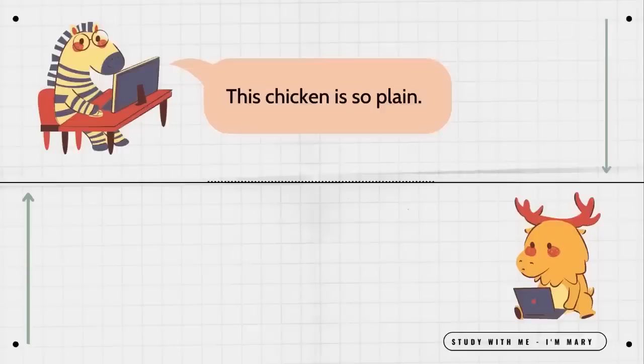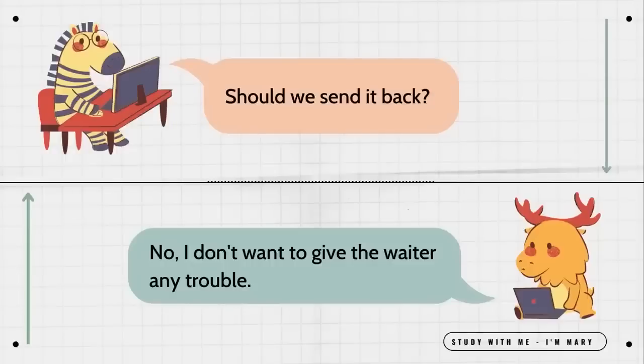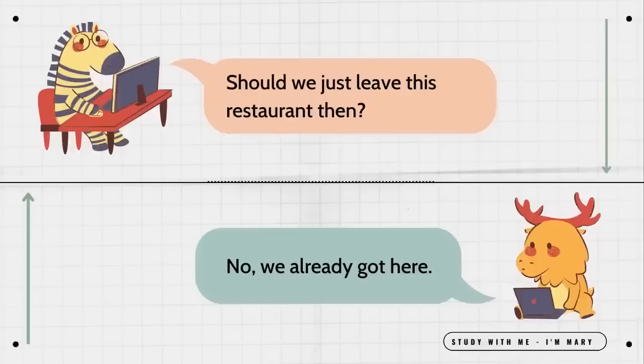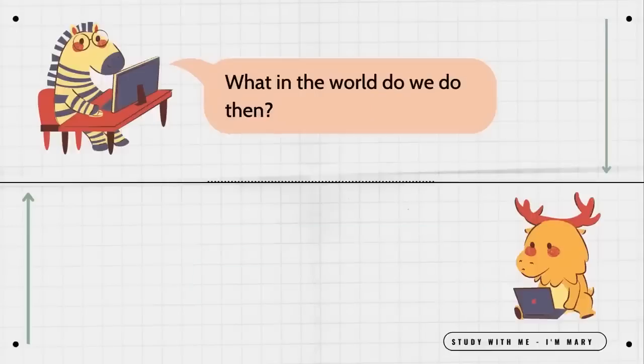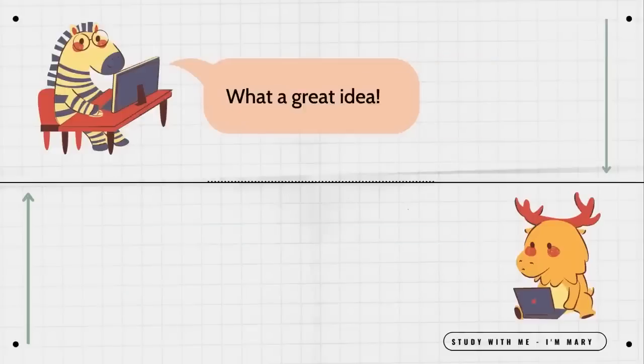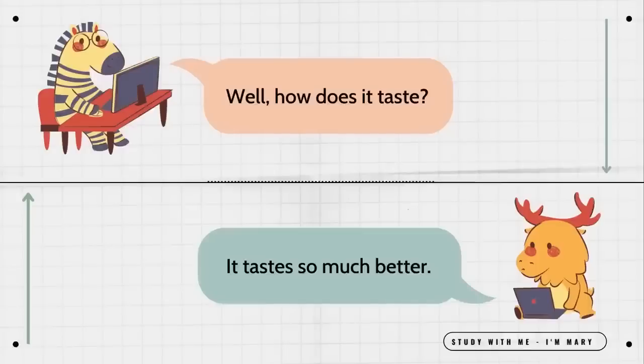This chicken is so plain. I agree with you. Should we send it back? No. I don't want to give the waiter any trouble. Should we just leave this restaurant then? No. We already got here. What in the world do we do then? I know. Let's add chili sauce and lemon. What a great idea. Okay. Here I go. Well, how does it taste? It tastes so much better.